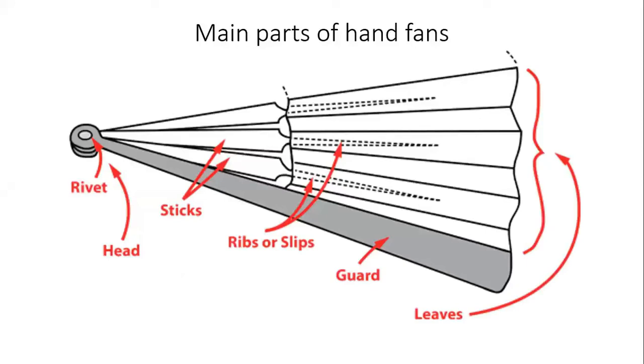Unit 5: The main parts of folding fans. Filet: thumbpiece attached to the guards at the pivot pin/rivet that acts as an ornamental reinforcement.